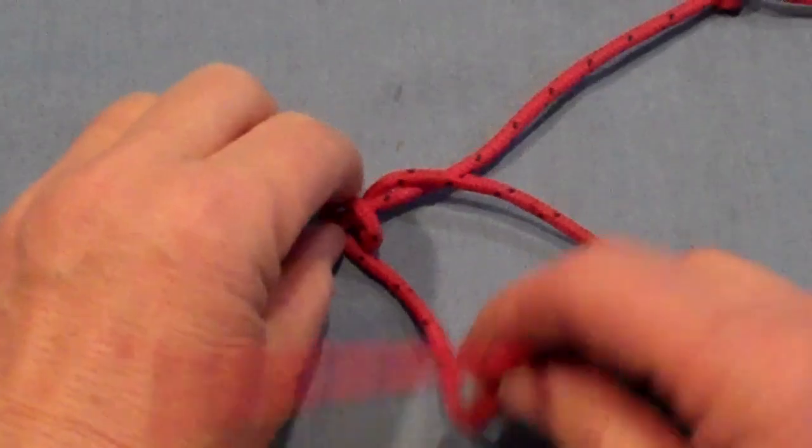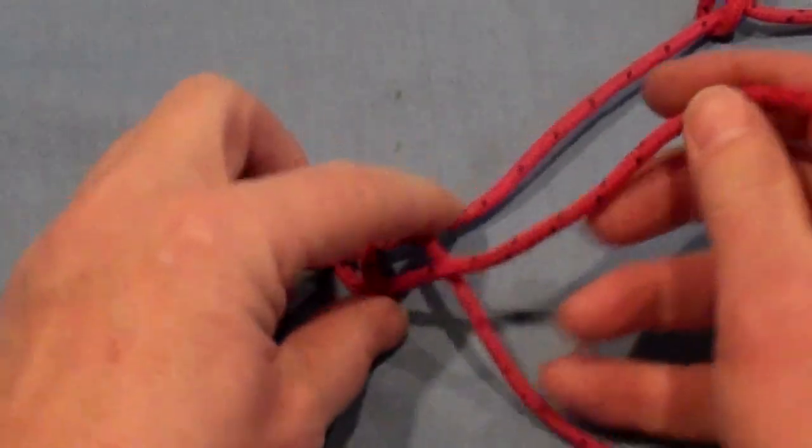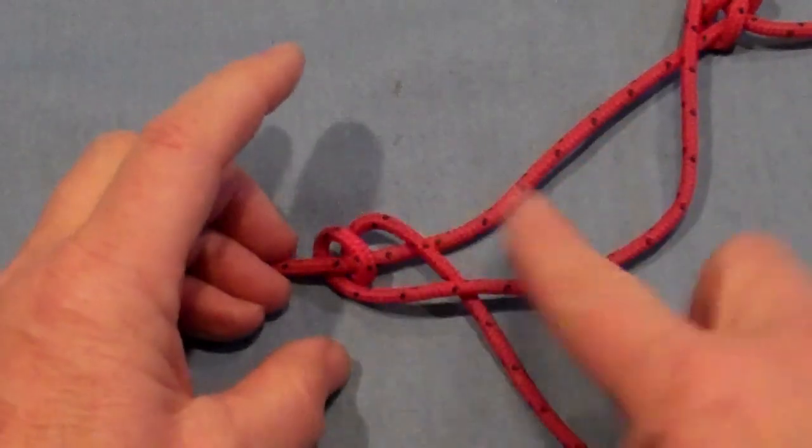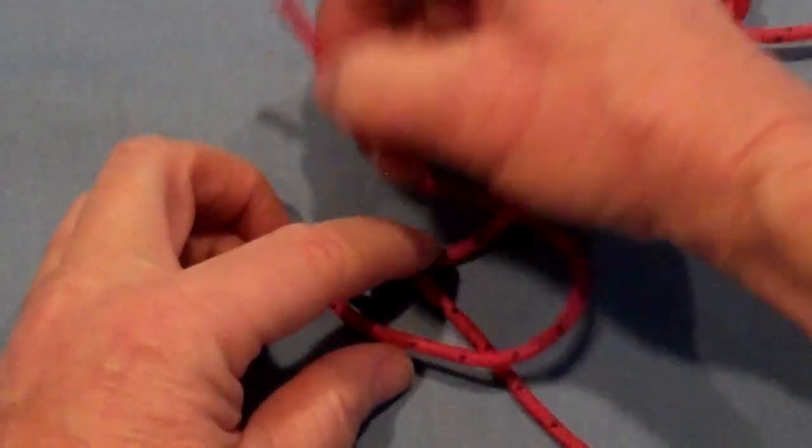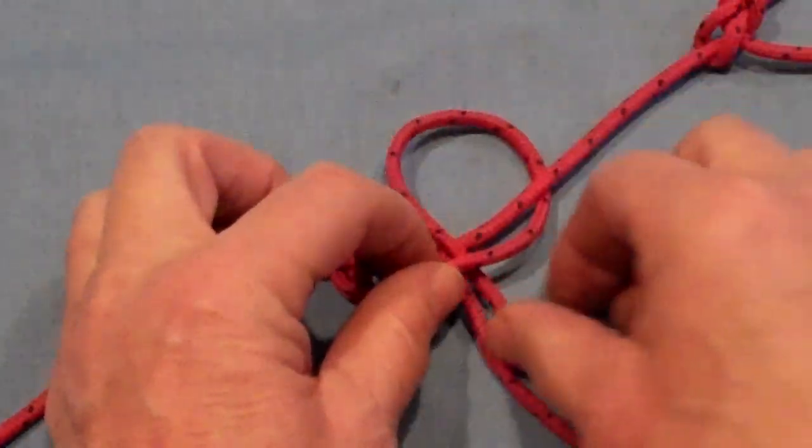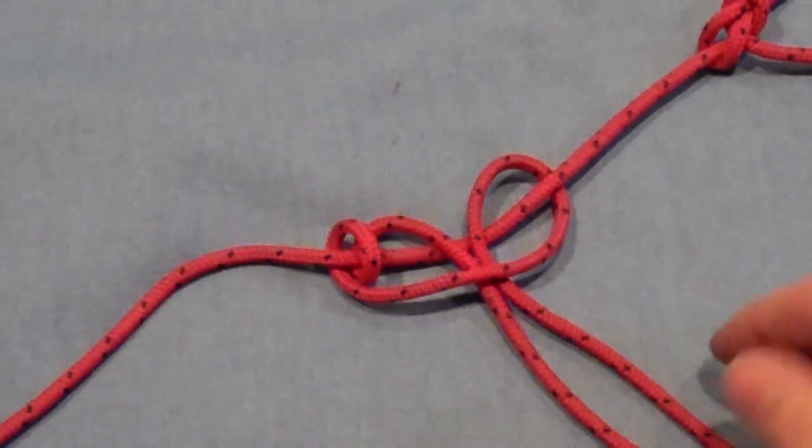Now, we're going to take the tag end and go around like this. Over the top, underneath the main line, and then through the side. It will end up looking like that.